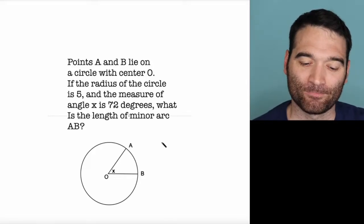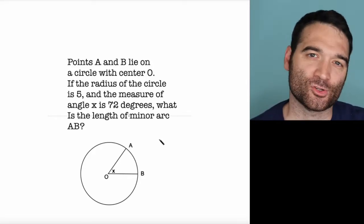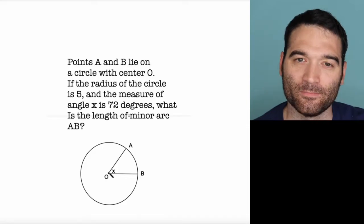Here's a GRE geometry question. Points A and B lie on a circle with center O. There it is. Boom.